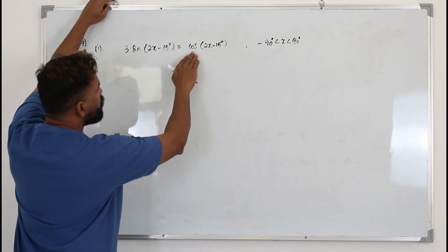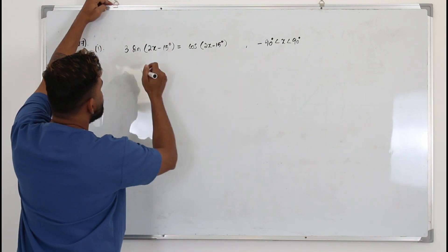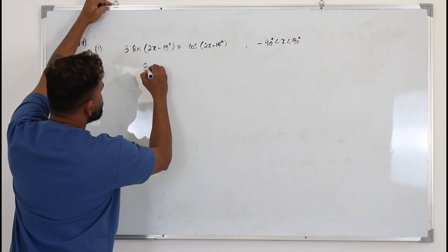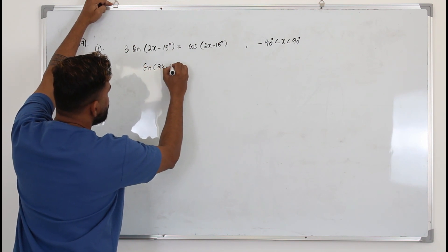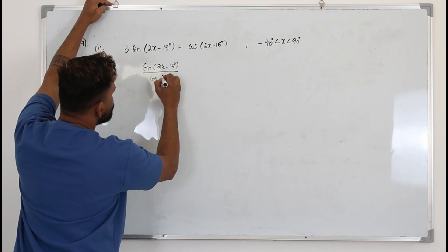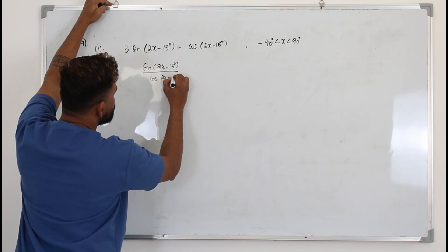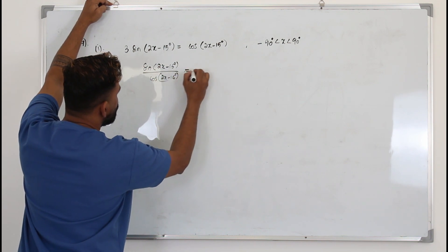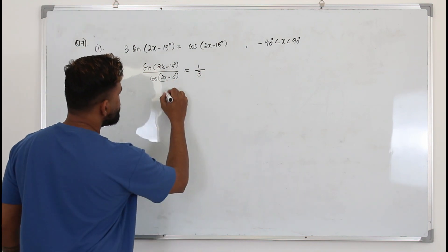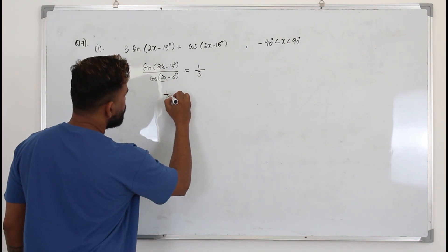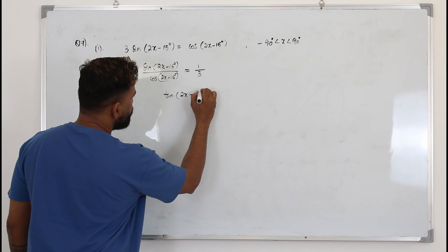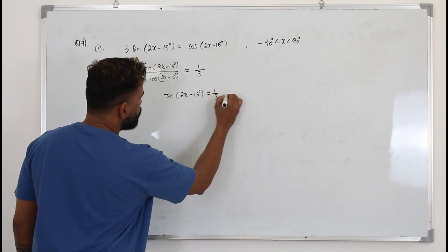If you divide everything by cos and bring the 3 here, you'll have sin(2x - 15°) over cos(2x - 15°) equals 1 over 3. So this can be written as tan(2x - 15°) equals 1 over 3.